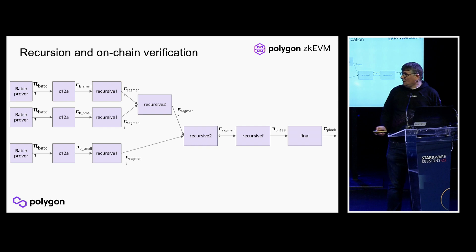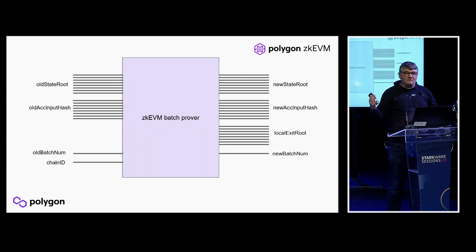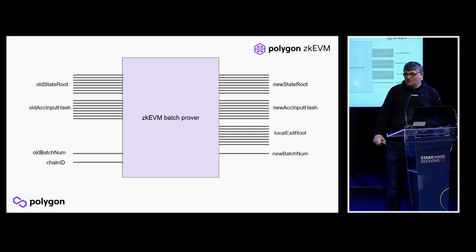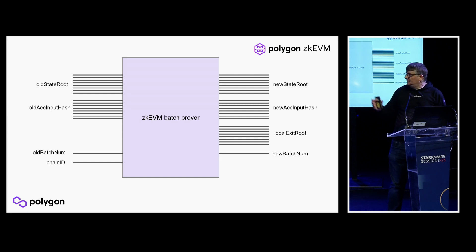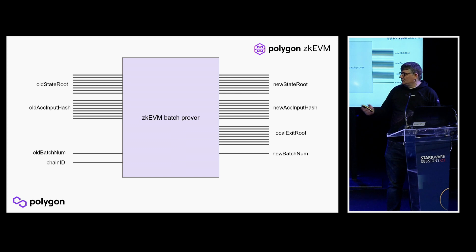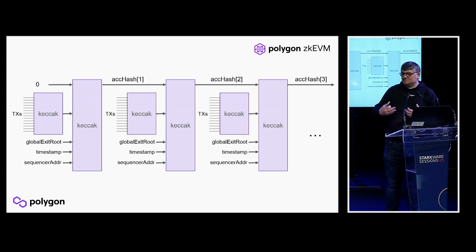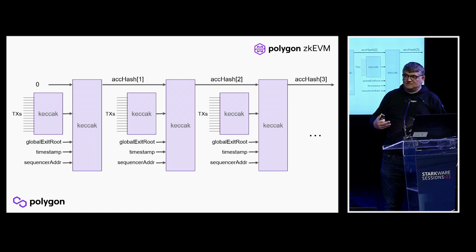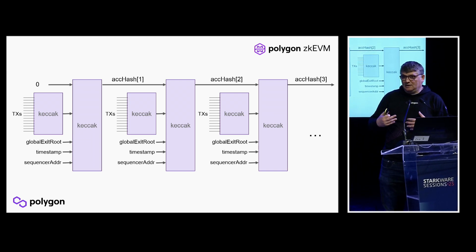The basic circuit where all the logic of the ZK-EVM lives is a huge STARK circuit working with the Goldilocks prime field. Looking at the inputs, it should sound quite familiar — it's a circuit that proves going from an old state root to a new state root. The transactions being processed come in as a second input: the accumulated hash. This is like a kind of blockchain built in the smart contract — in each batch we hash all the transactions and chain them together.